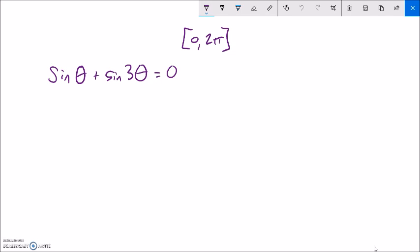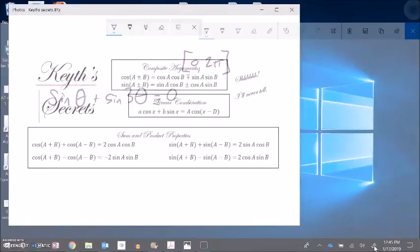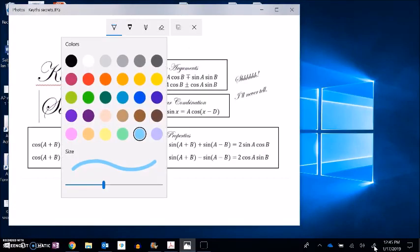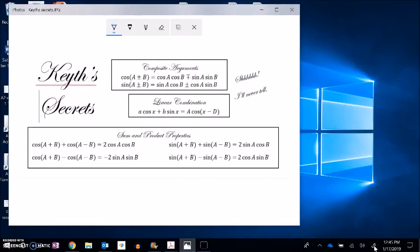Now when these are added together there's not a lot I can do. So I'm going to condense these. I'm going to take this sum and write it as a product. Now if I look at what Keith has to say, I had, what do I have? Sine plus sine. Yeah sine plus sine. That's this one.